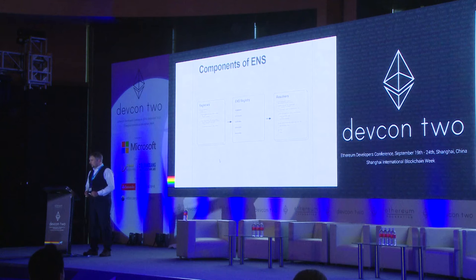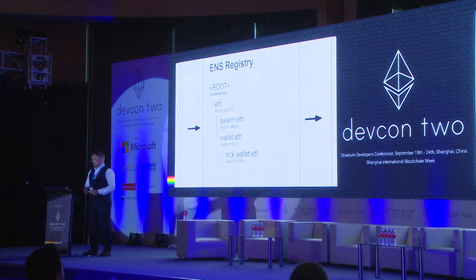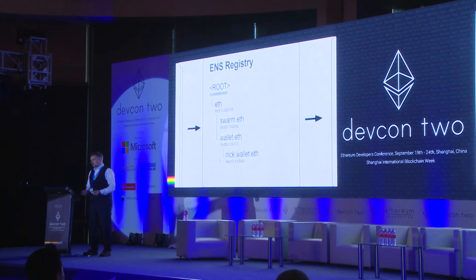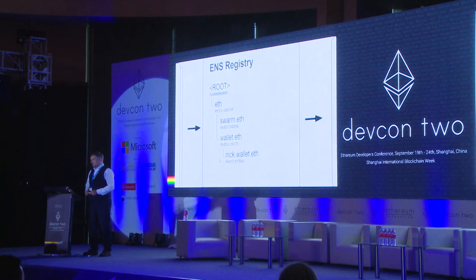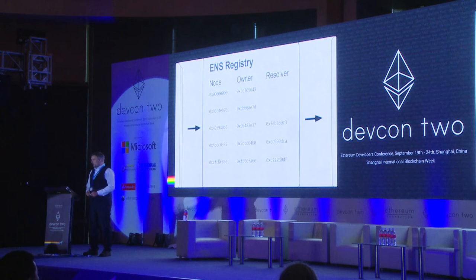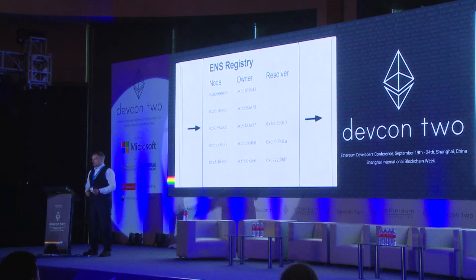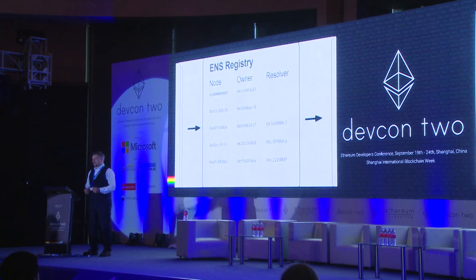Looking at the registry — conceptually it's structured like a tree. You have the root node, under that you have all the top level domains, under that you have all the user's domains like swarm.eth, wallet.eth and so on. It's hierarchical, so once you own a name you can create names under that. Each of these is associated with a node ID that represents the name. Internally it's just a big lookup table — it maps a node number to an owner, who is the account with the right to update the name, and a resolver which turns names into values.